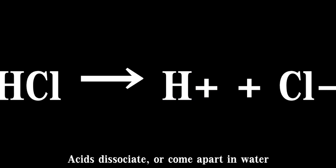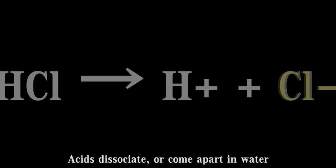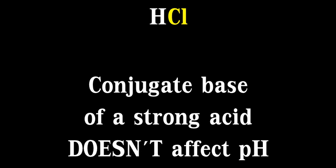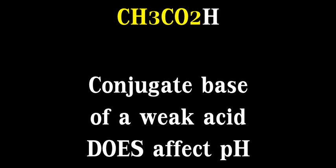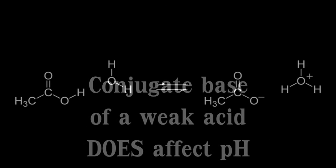For example, on HCl, the conjugate base is Cl-. The conjugate base of a strong acid is weak and has no real effect on the pH. However, the conjugate base of a weak acid is stronger and has a significant effect on the pH.